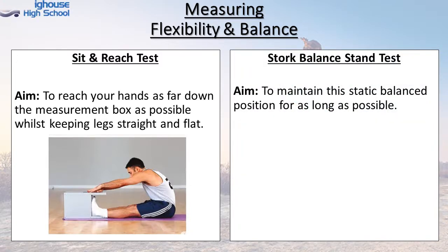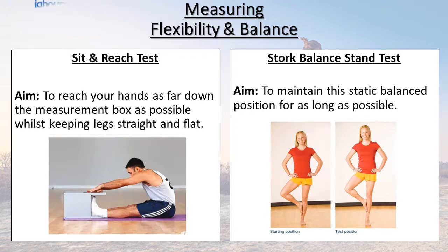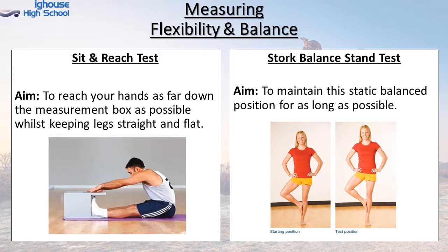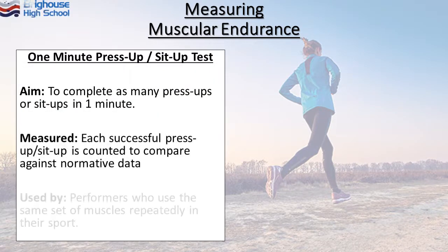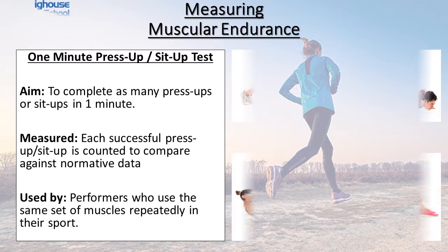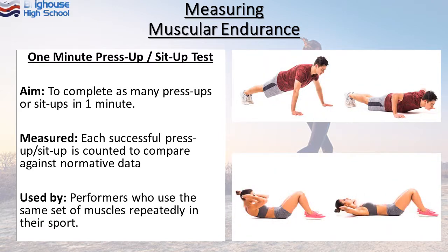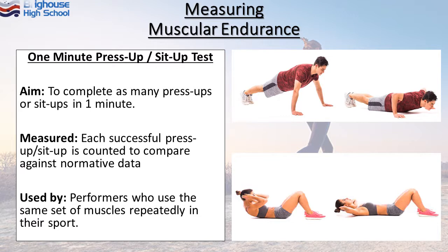Balance is measured using the stork balance stand test, which requires the athlete to remain in a static balance position for as long as possible. You can see the starting position and the test position — that's the position you need to maintain for as long as possible. Muscular endurance is measured either using the one minute press-up test or the one minute sit-up test, completing as many as possible in that one minute. Each successful press-up or sit-up is counted and compared to normative data. Muscular endurance is generally used by athletes who use the same set of muscles repeatedly, such as a cyclist or a rower.